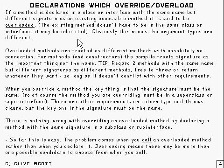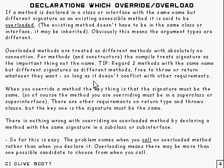Because the name is the same and the signature is different, it means that the argument types are different. Overloaded methods are treated as different methods with absolutely no connection between them. For methods and constructors, the compiler treats the signature as the important thing and not the name. If you want to identify a particular method, it goes by the signature — not just the name.